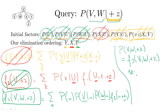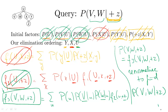We just renormalize to find P(V, W|+Z), and we're done. Again, let's consider the size of the factors generated along the way: the first factor had two variables (U and X), the second had one variable (U), and the last had two variables (V and W). Not too bad — the factors generated were relatively small, so this would have been computationally quick to compute. That's it for the variable elimination examples.